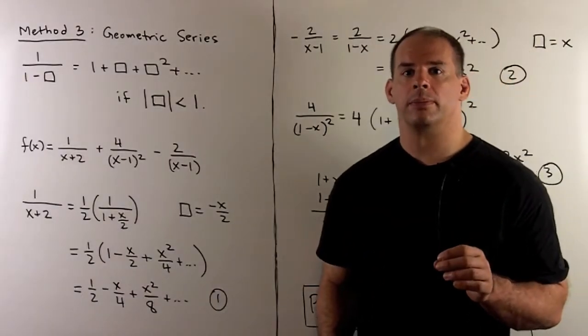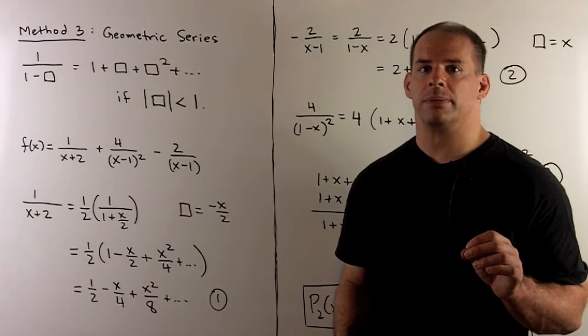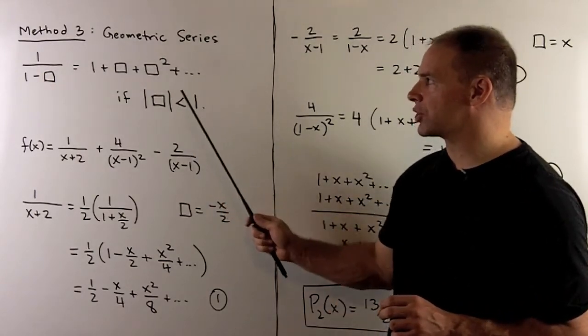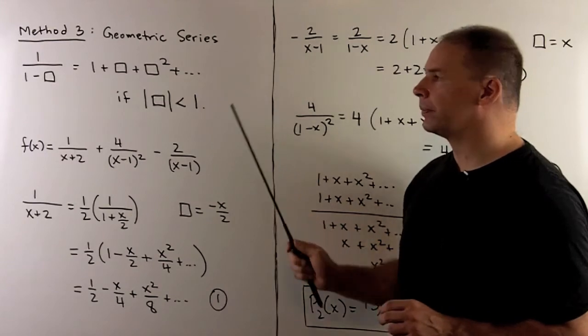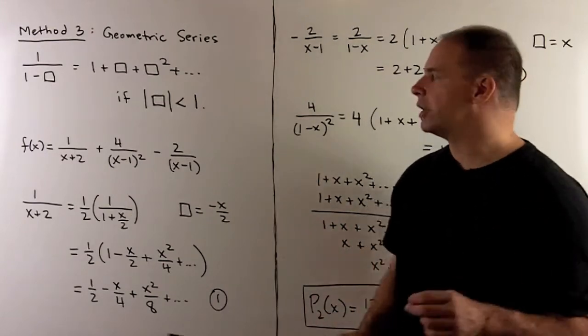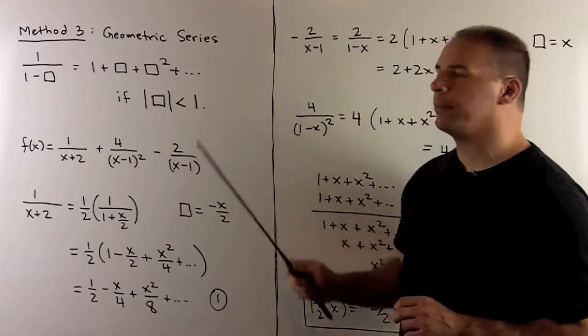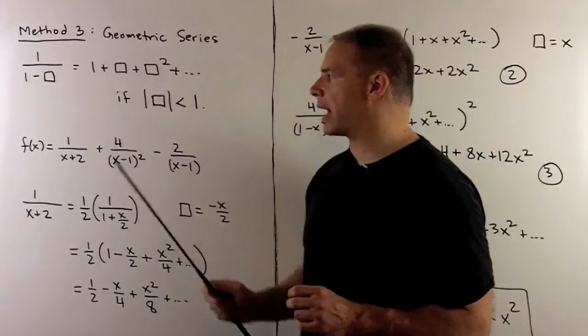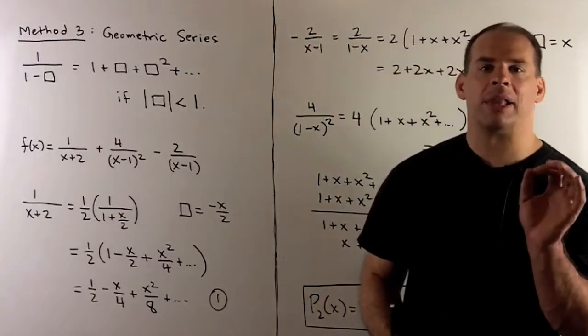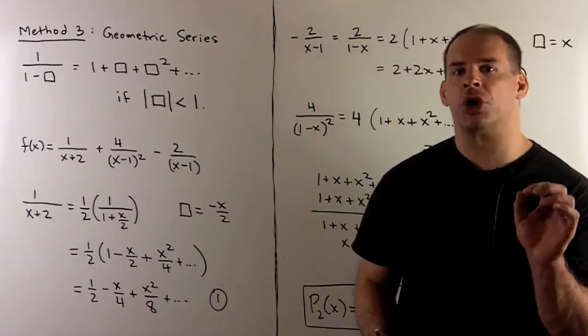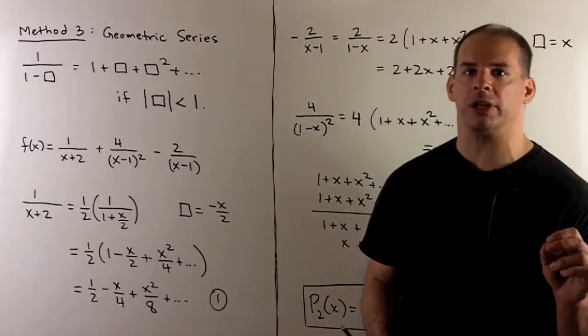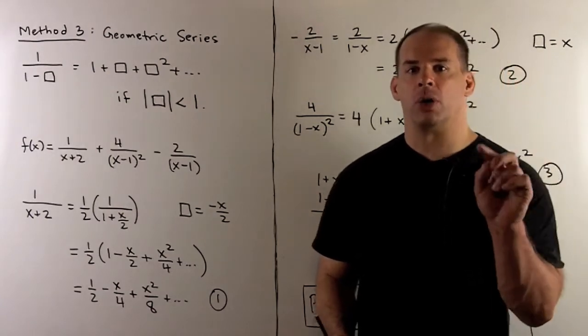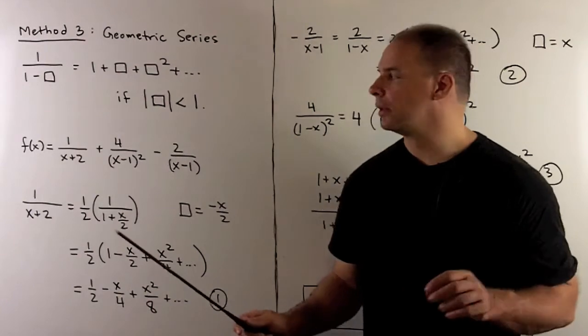For our third method, we'll use geometric series. Recall if I have 1 + box + box² and so on, that'll converge if the absolute value of box is strictly less than 1. Then it's equal to 1/(1-box). So we're going to apply this formula to each term in our partial fraction expansion. It'll be valid because we're going to use x very close to 0.